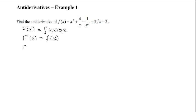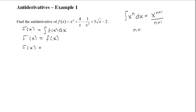Now we can start to take our antiderivative. For the first term, we have x squared. When we take the antiderivative of x to the n, it's going to be x to the power of n plus 1 over n plus 1. This works for all integers except for negative 1, because when you add 1 to negative 1, you get 0, and you cannot divide by 0.